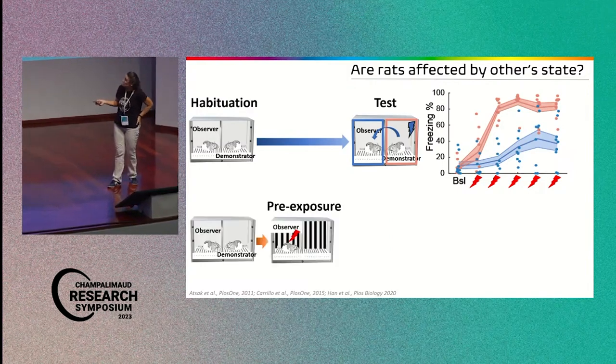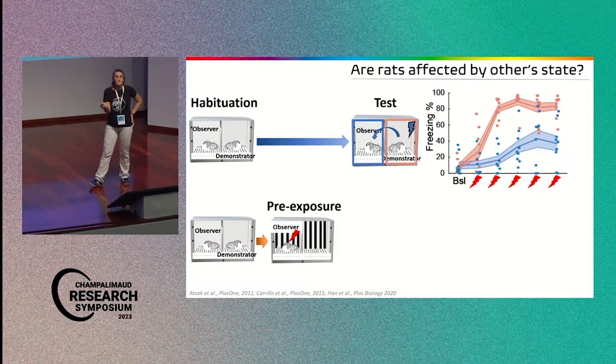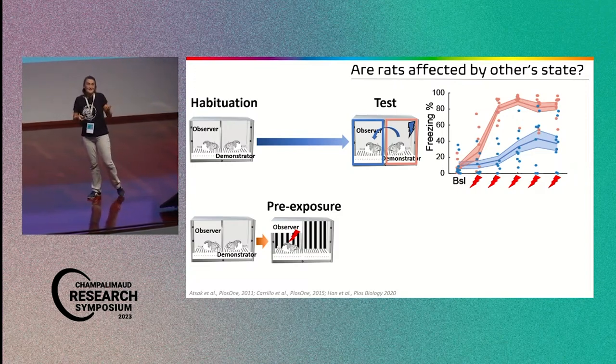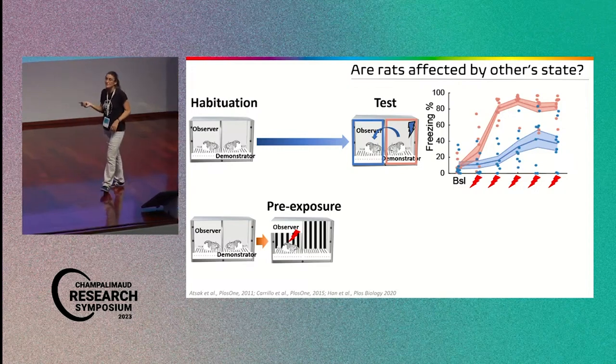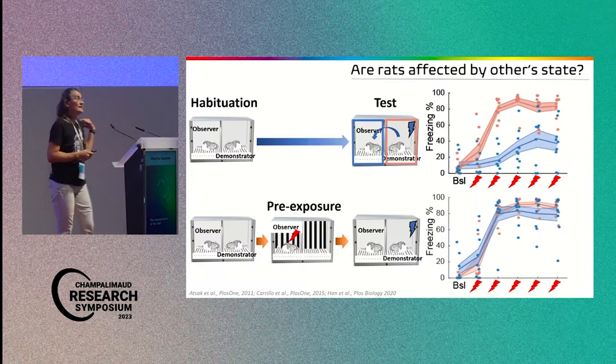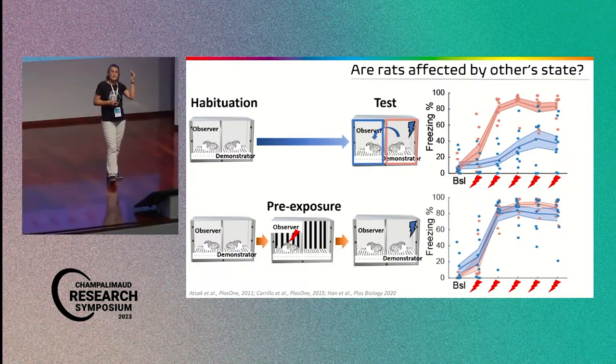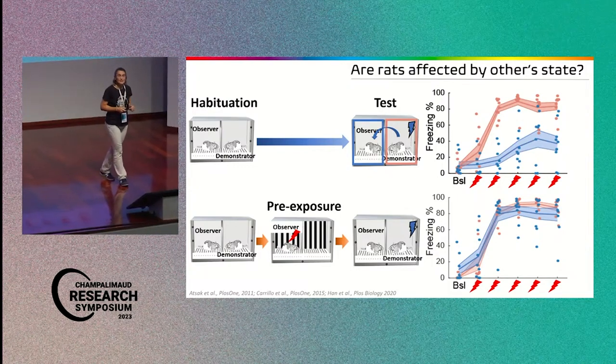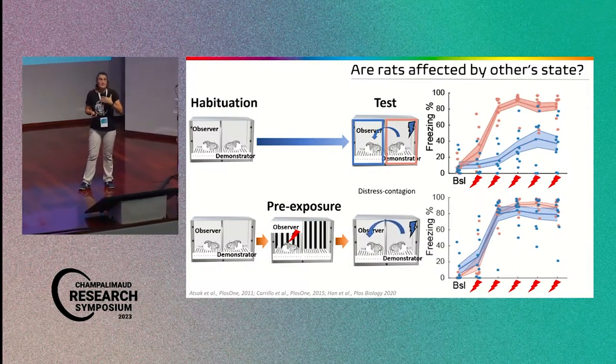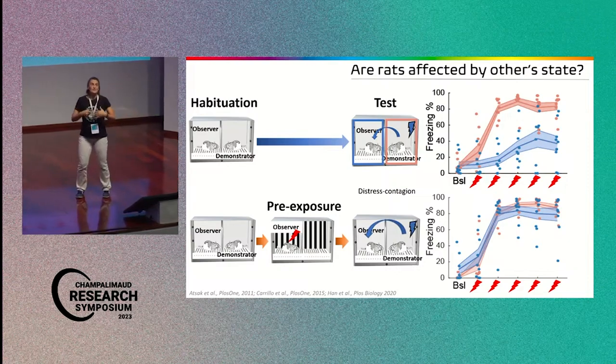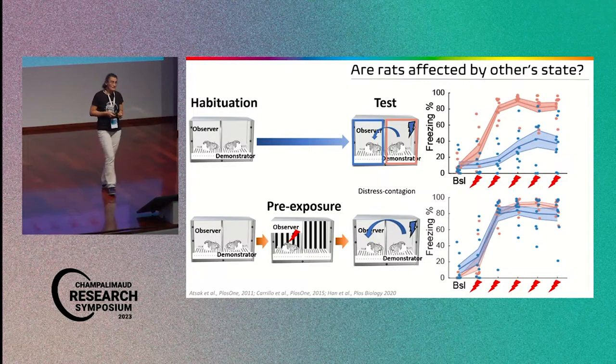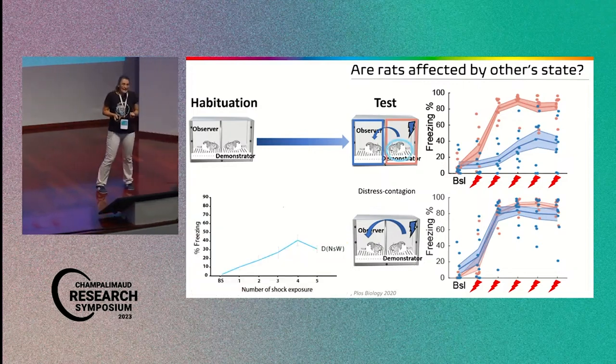And if we now include a pre-exposure session between the tests in which we teach basically the observer what it means to get a shock, and we do this in a completely different environment, and then we do the test again, and we measure the freezing, what you see here is that the freezing of the observer now matches pretty well that of the demonstrator, suggesting that the pre-exposure, like having experience of a particular situation, increases your sensitivity or enhances your response to the state of the other.